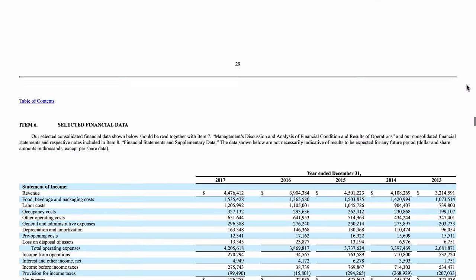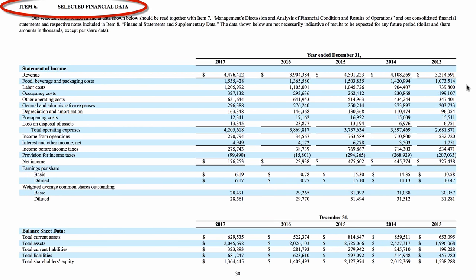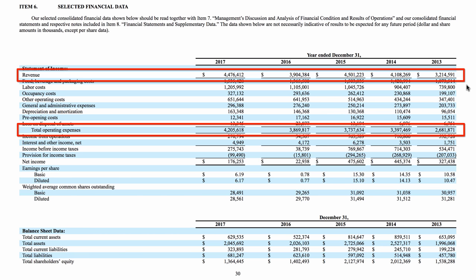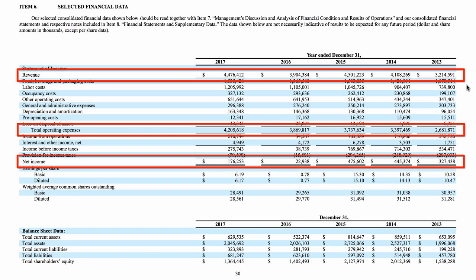The last place we want to look is the Selected Financial Data table. In every 10-K, this table is called the same thing — Selected Financial Data — so if you're looking for it, you can type those words in the finder and you will be taken directly to it. The table provides financial information for the past few years, in this case from 2013 to 2017, allowing us to compare how the company's financial standing has changed. The three most important rows in this table are Revenue, Total Operating Expenses, and Net Income.